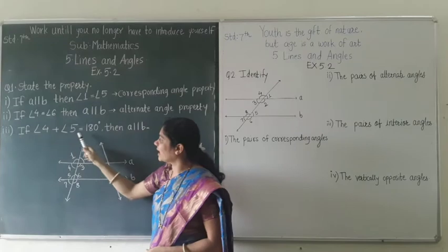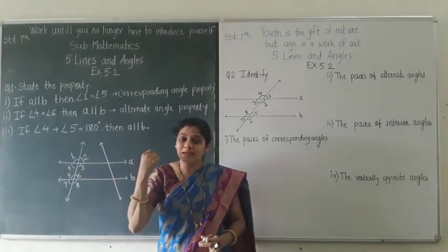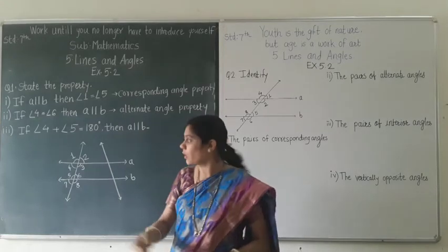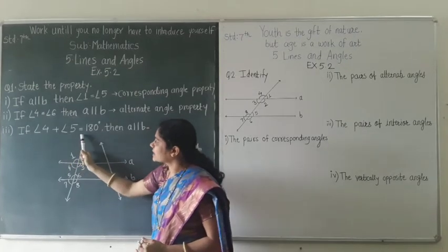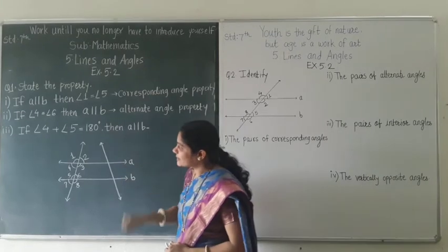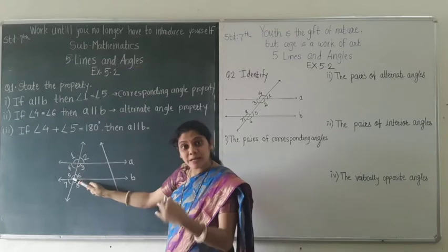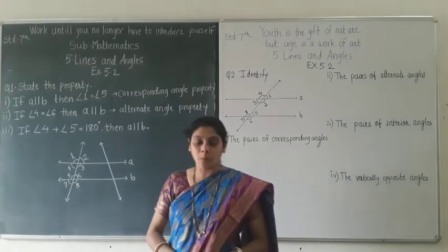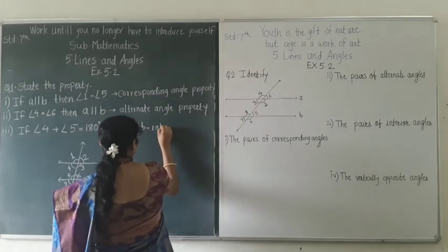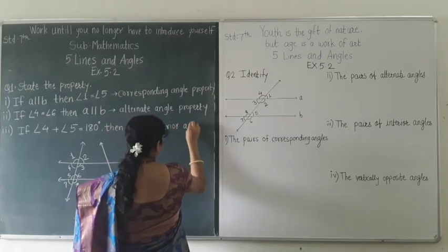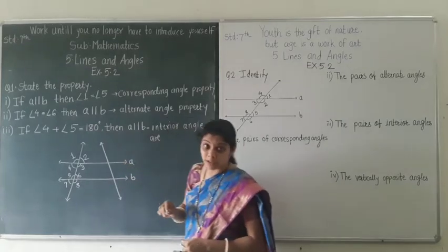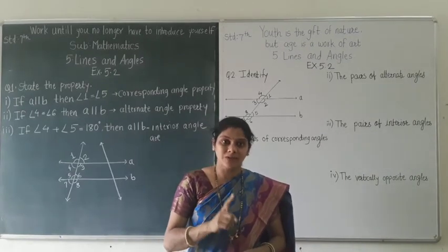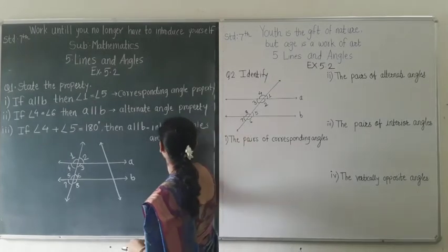Now the third one: angle 4 plus angle 5 is equal to 180 degrees. By reading this statement you might think it should be the interior angle property since the sum is 180. But we have to check the position of angle 4 and angle 5. Both these angles are on the same side of the transversal and at the inner part of the diagram, so this property is correct — it is the interior angle property. We write: interior angles are supplementary, because supplementary angles are those whose sum of measurements is 180 degrees.